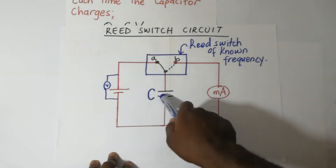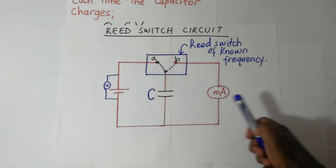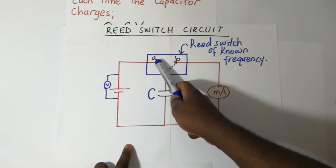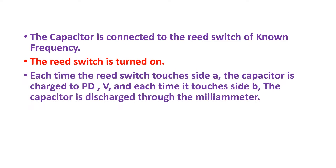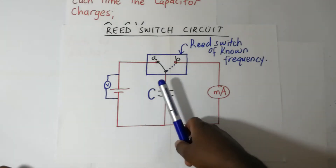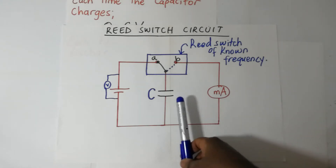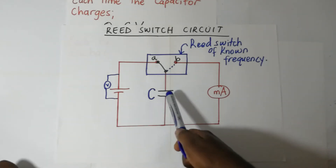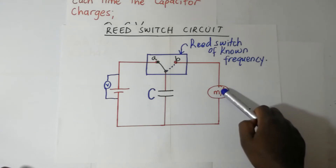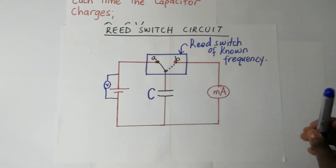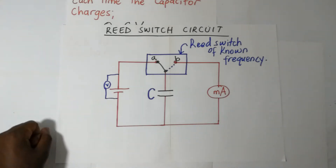As the capacitor is getting discharged we are able to measure the current. When the reed switch connects to point A the capacitor charges, and when it connects to B the capacitor discharges. While charging we get the potential difference across the capacitor, and while discharging through B we get the current measured by the milliammeter. The readings on the voltmeter and milliammeter are noted.